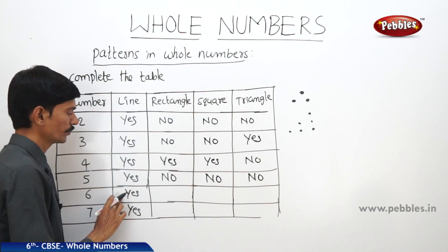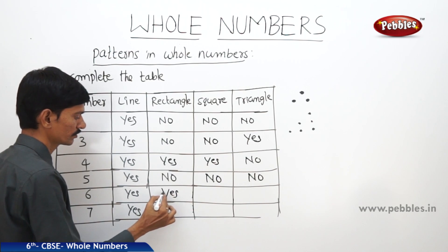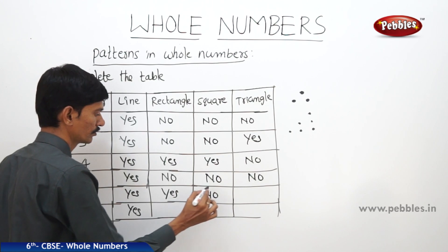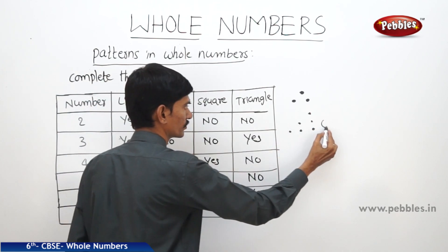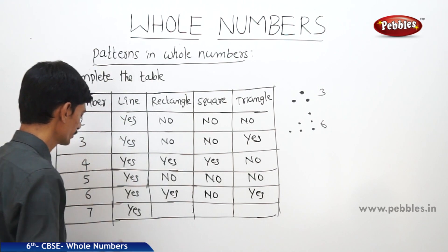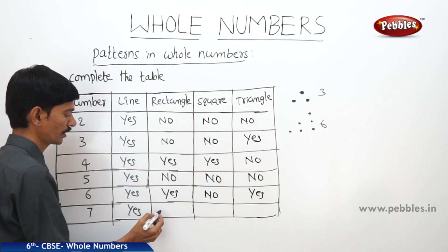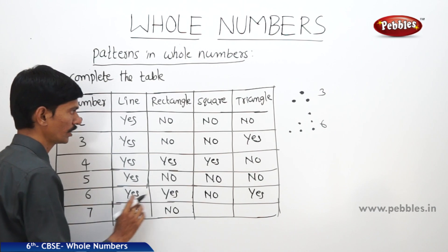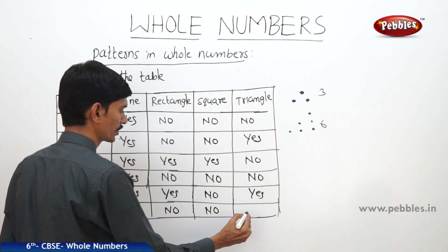6 can be shown as the line, and 6 can be shown as the rectangle — yes. Now 6 cannot be shown as the square. Now 6 can be shown as the triangle — yes. Next, 7 cannot be shown as the rectangle, 7 cannot be shown as the square, and 7 cannot be shown as the triangle.